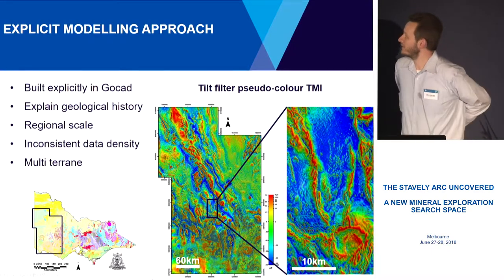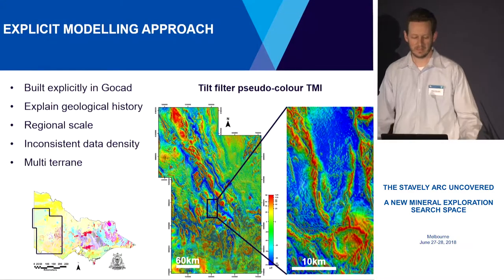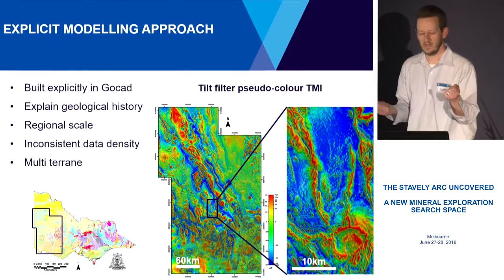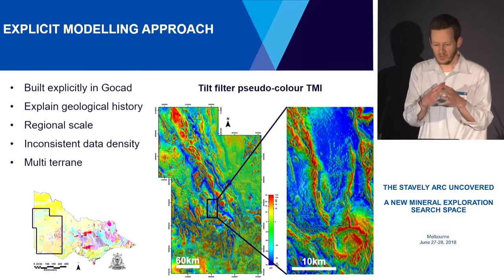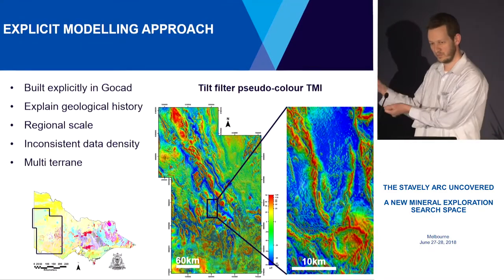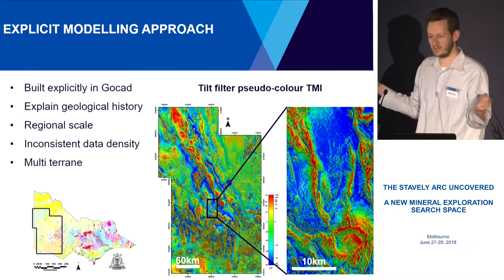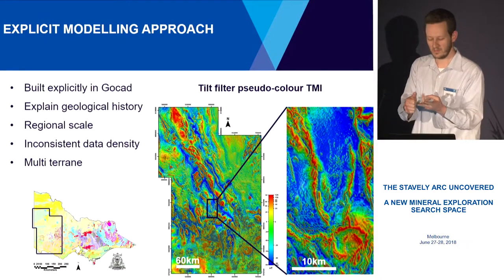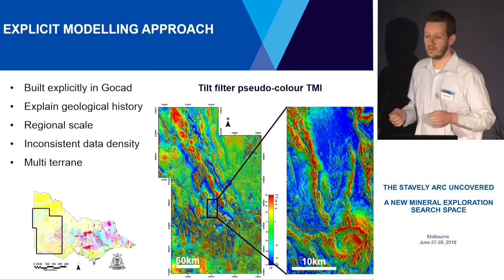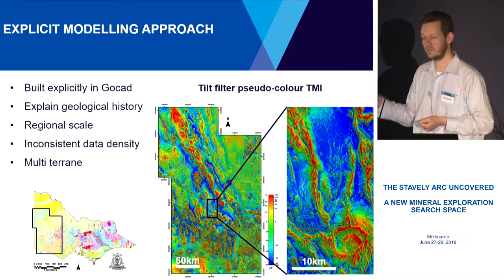We did build a model in an explicit fashion. The basic difference between building an explicit or implicit model is: if we're building an explicit model we're doing it manually, taking all the necessary data and manually building the surface to represent the fault or geological structure. In the implicit case, we take all the necessary datasets — structural mapping, gravity, magnetic, seismic — input them into the software, and the software does a series of statistical analyses to generate a range of models and quantify the uncertainty.